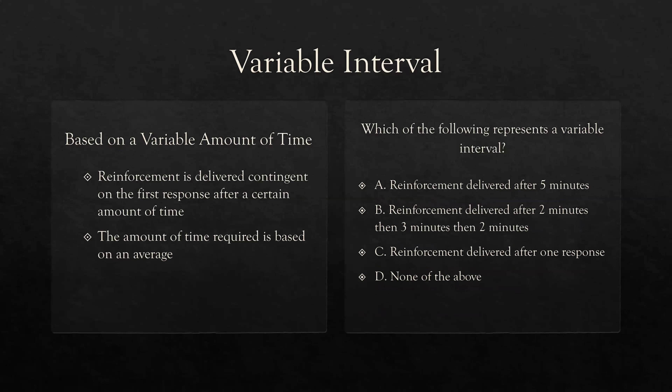Variable interval: based on a variable, changing, average amount of time. Reinforcement is delivered contingent on the first response after a certain amount of time, just like the other schedule, except the amount of time required is based on an average. So with a variable interval 2-minute schedule, you might deliver reinforcement after one minute, then four minutes, then two minutes, then three minutes — as long as we're close to that average. Variable is average; fixed is unchanging.